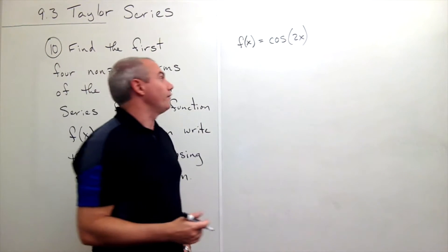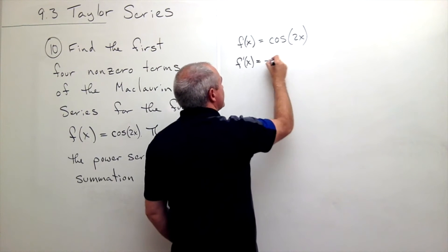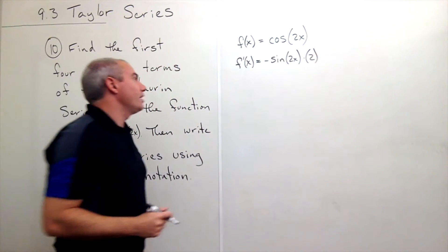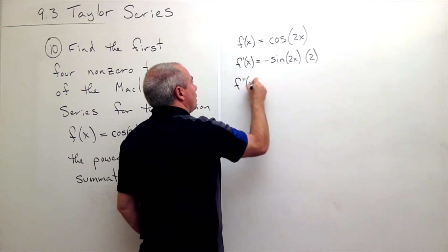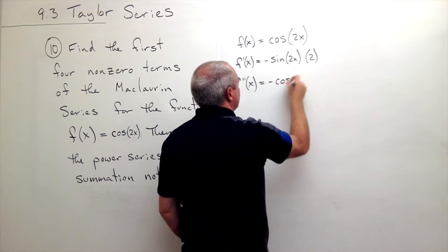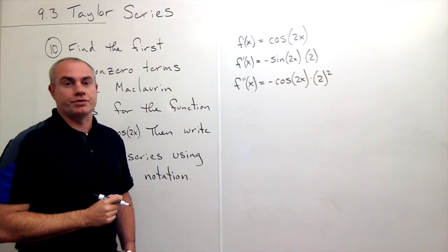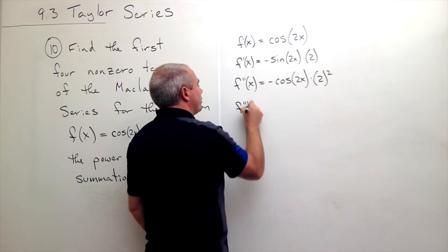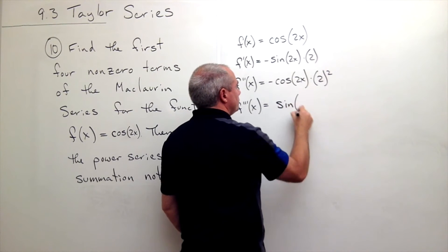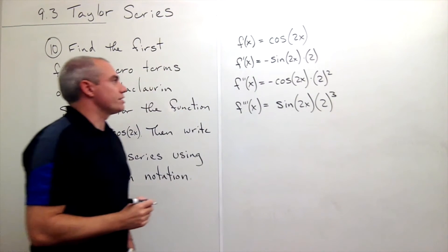Now let's take some derivatives of that function. The first derivative is equal to — well, the derivative of cosine is negative sine — so we get negative sine of 2x times 2. If we take the derivative of negative sine, we get negative cosine of 2x times 2 squared. We get an extra 2 from the chain rule. For the third derivative, the derivative of negative cosine is sine, so I get sine of 2x times 2 cubed.